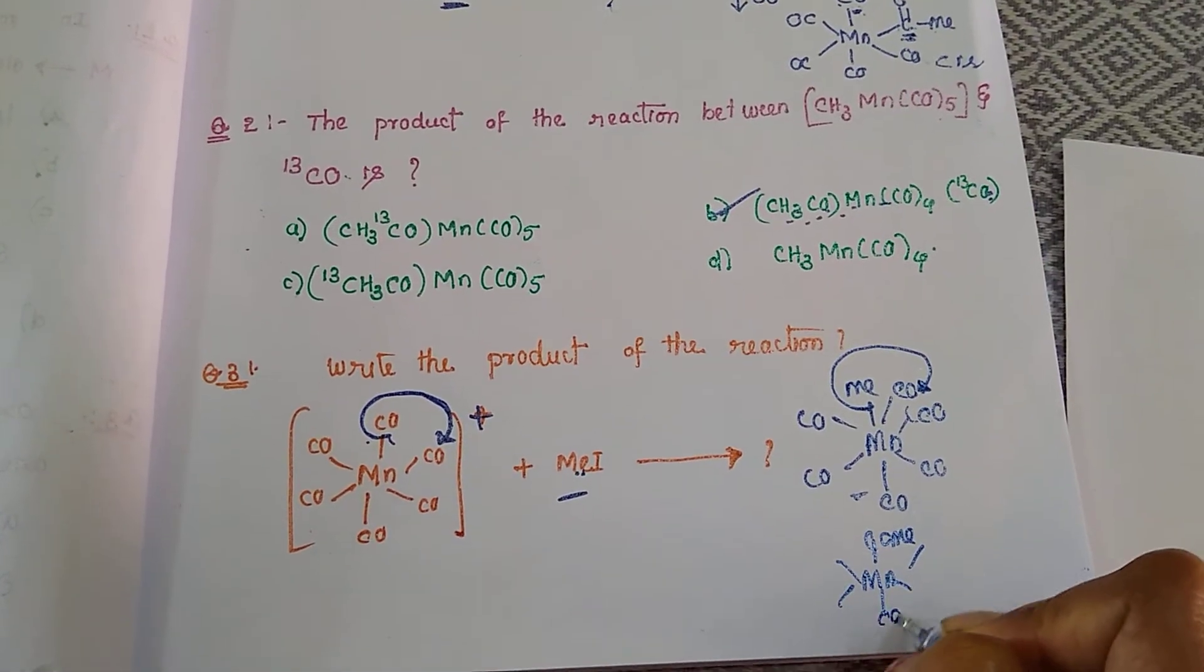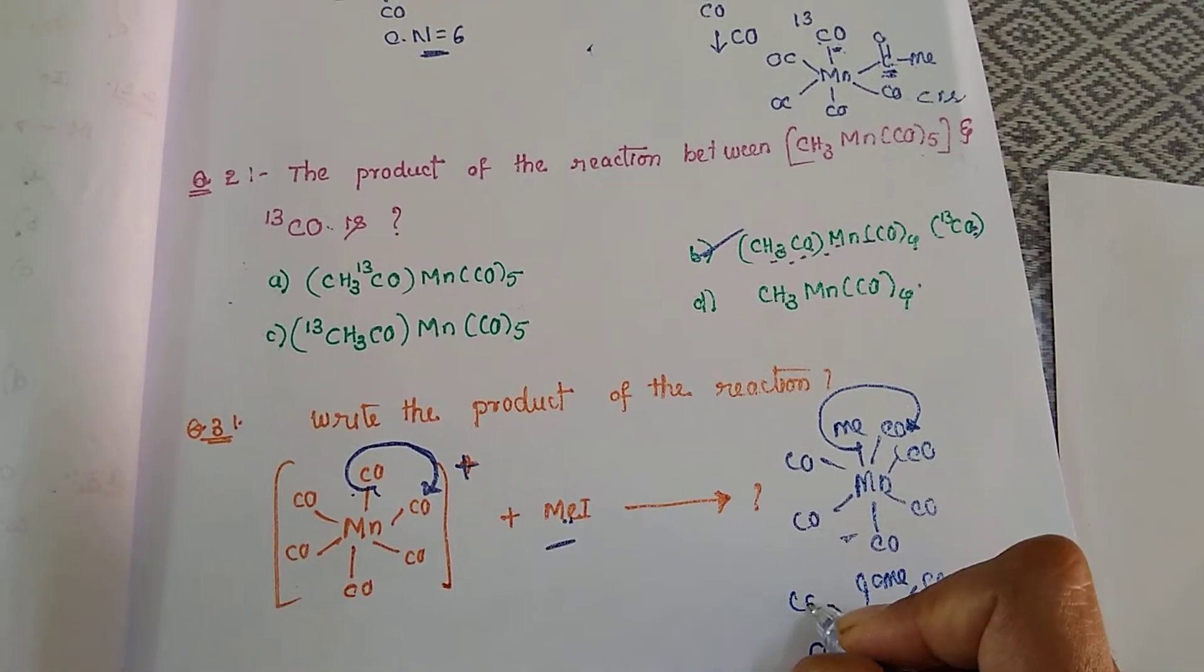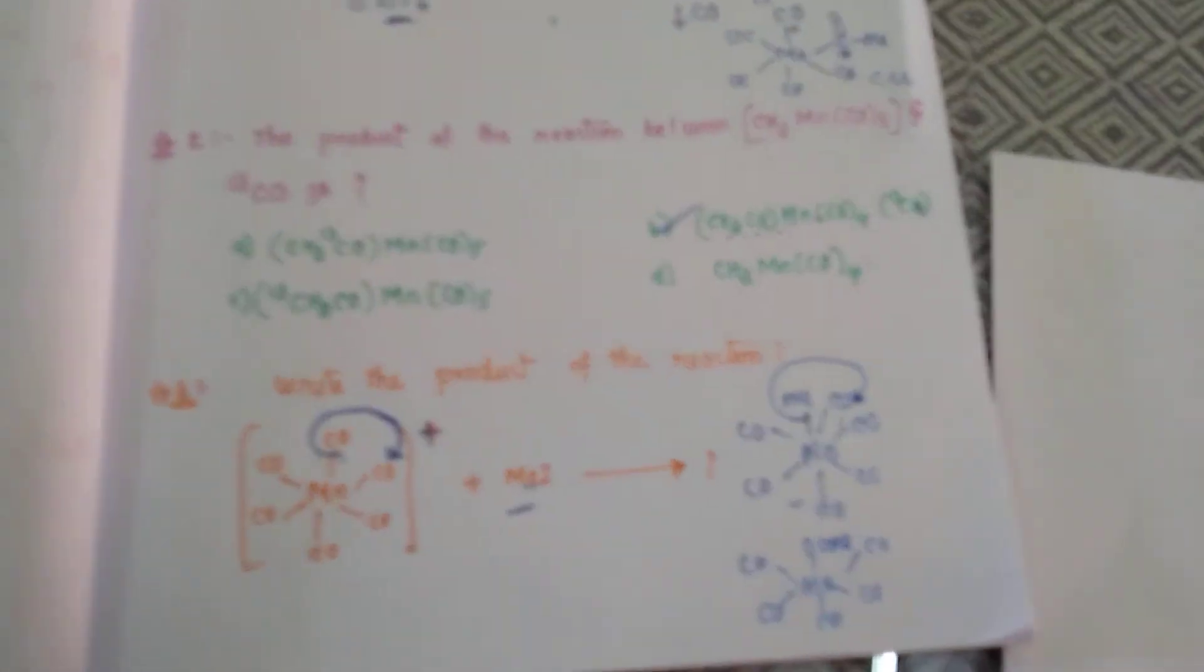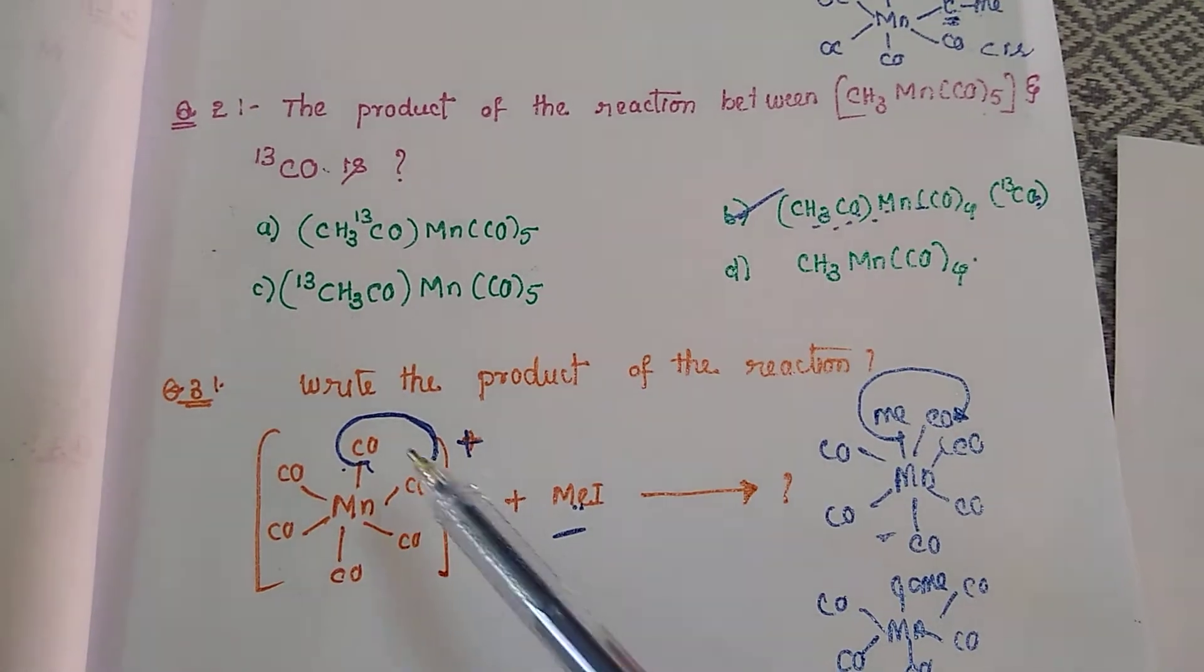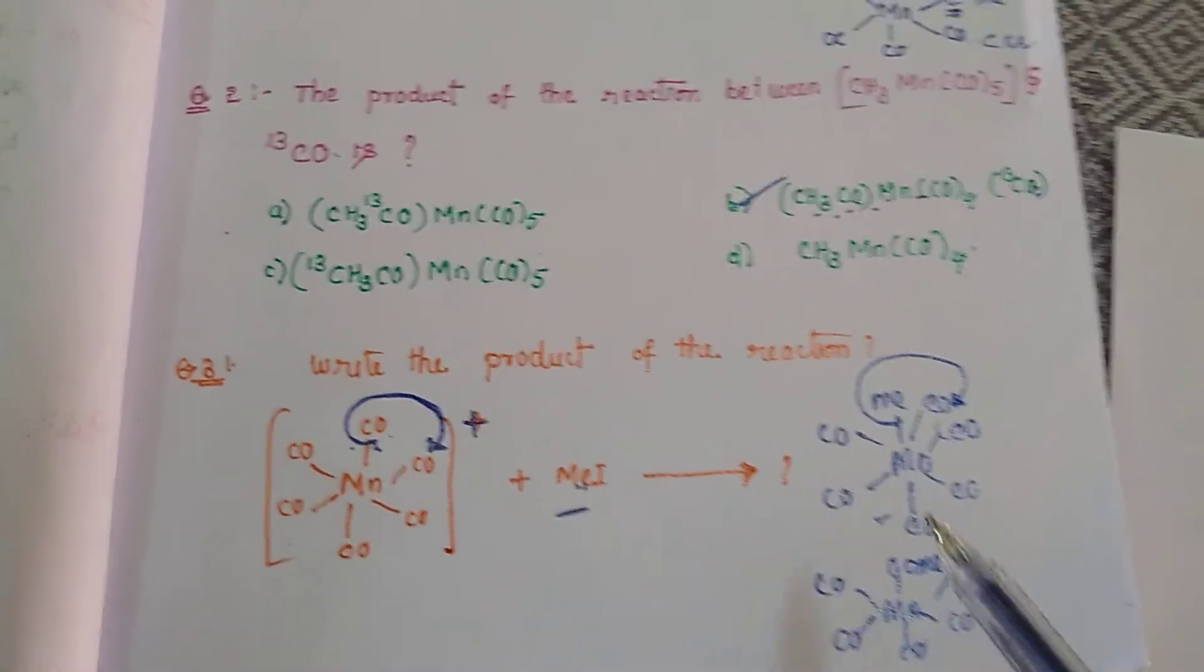So the product is Mn-CO-ME. The remaining COs will be as is. So here the coordination number does not change but the change happening is insertion as well as migration. The migration is happening at the same time insertion is also happening. Thank you for watching this topic.